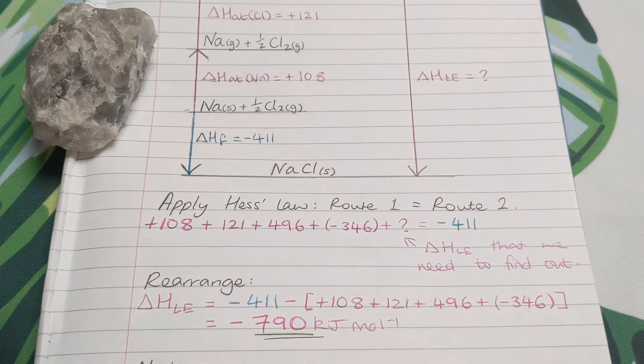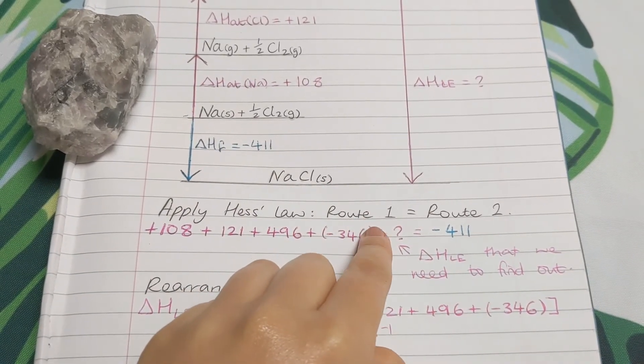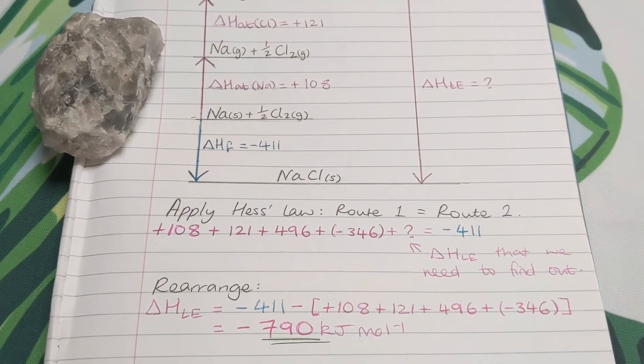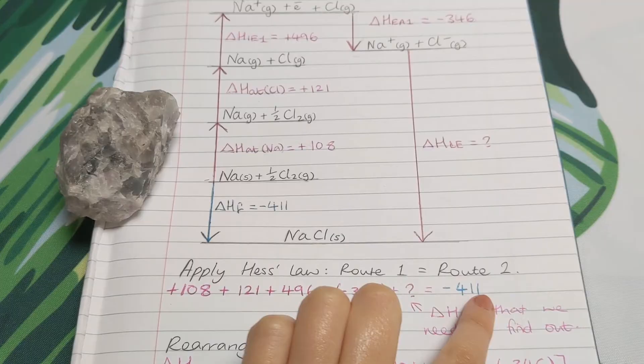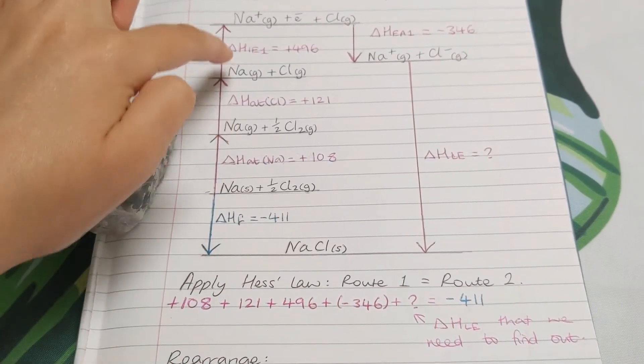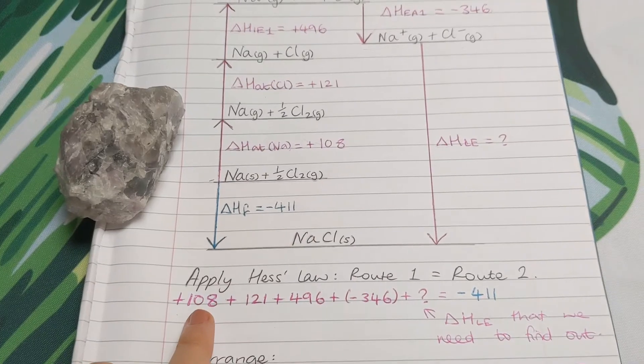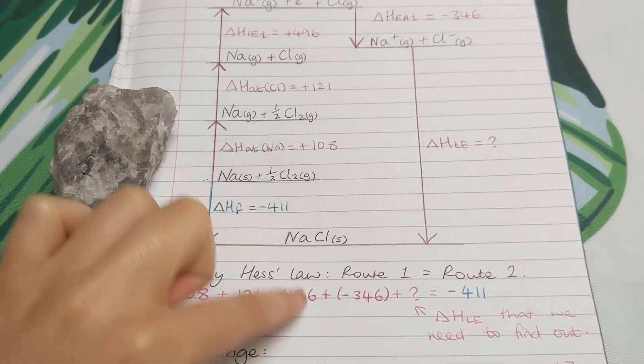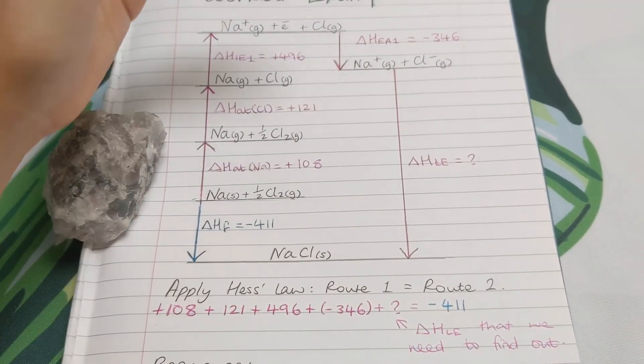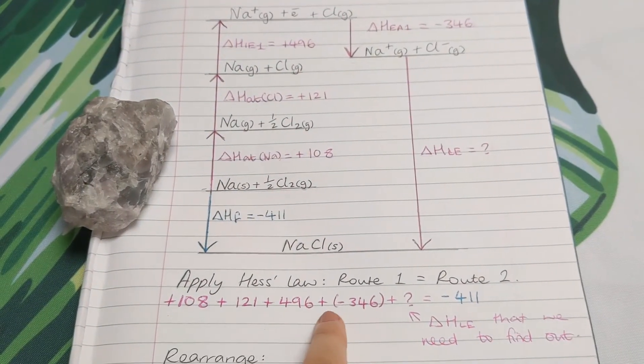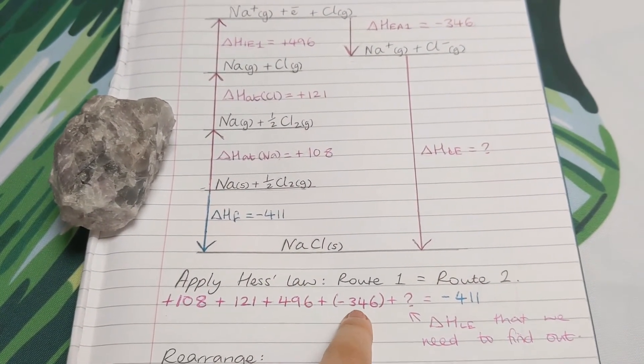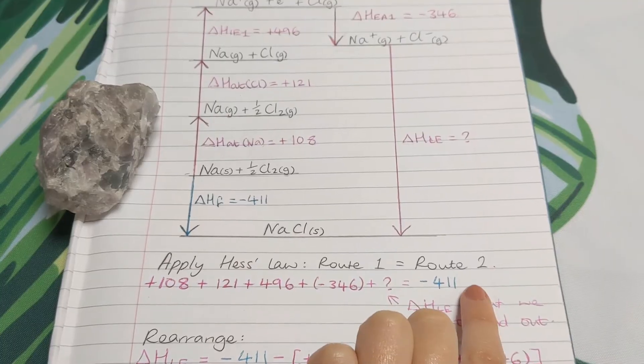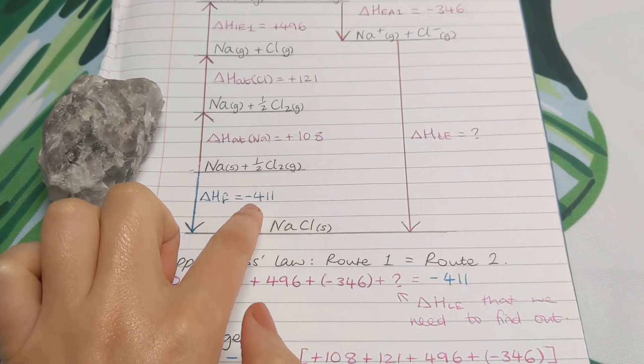Now what that's talking about is the energy required. To go through route one is equal to the energy needed to go through route two to get to the same point. So what we're going to do is write this out as an equation and collect all the terms involved in route one. So we do plus 108, we're going round with the pink numbers, plus 121, plus 496. So we're adding them, because we're collecting them, plus minus, that will give us a minus overall, minus 346, plus the thing we're trying to work out, equal to the terms in route two, there's just one of them, minus 411.